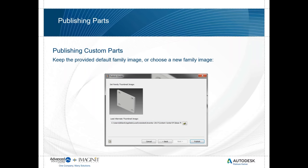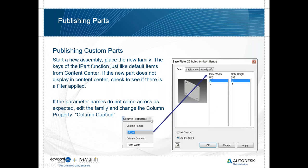Once you've completed that, it will give you a thumbnail preview. That thumbnail preview is very important because it's what the system is going to use in Content Center when you go in to place information. From there, you have columns in here and this is how you associate information — it tells you what the column name is and what the column caption is. The column caption is what you're going to see when you go in to place it.